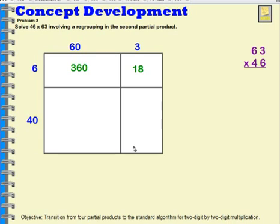Now let's take a look at this part of the rectangle. 3 times 40 or 3 times 4 tens. 3 times 4 is 12. So 3 times 4 tens is 12 tens. 12 tens is equal to 120.